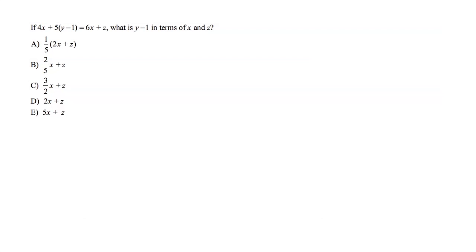We have 4x plus 5 times the quantity of y minus 1 equals 6x plus z. What is y minus 1 in terms of x and z?